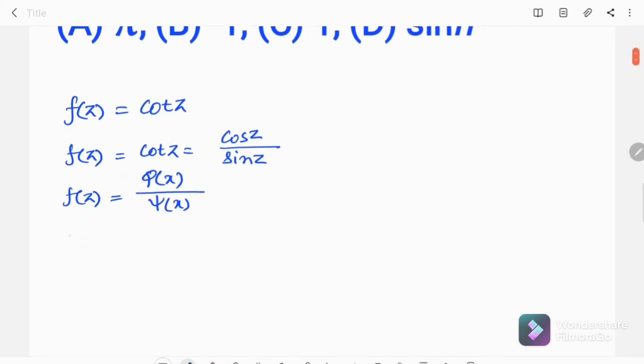Clearly, at z equal to 0, ψ(0) will be 0, but φ(0) will not be 0.